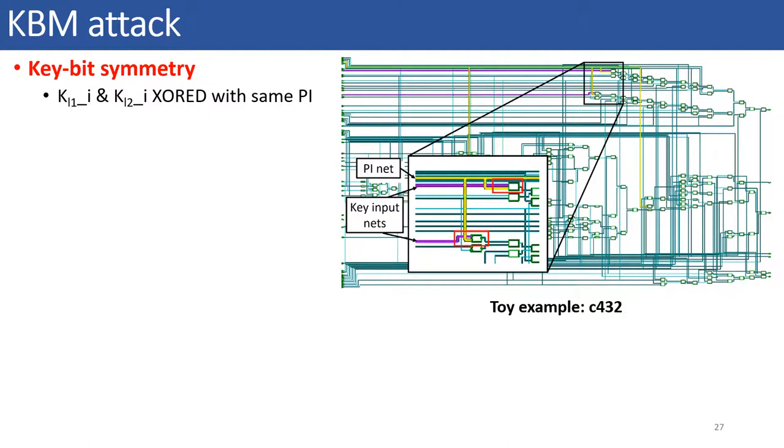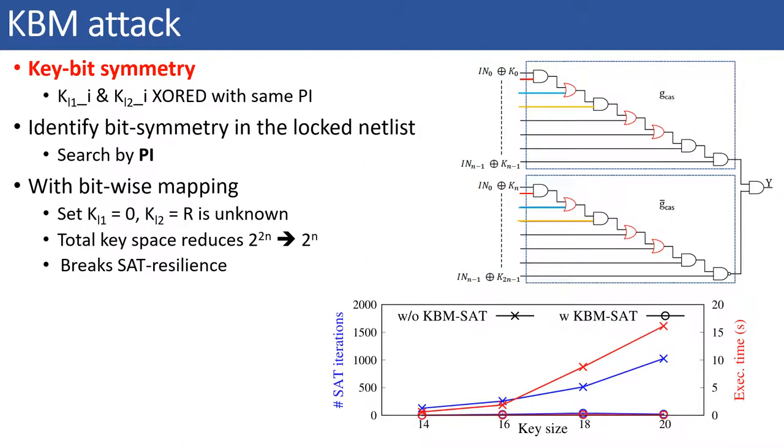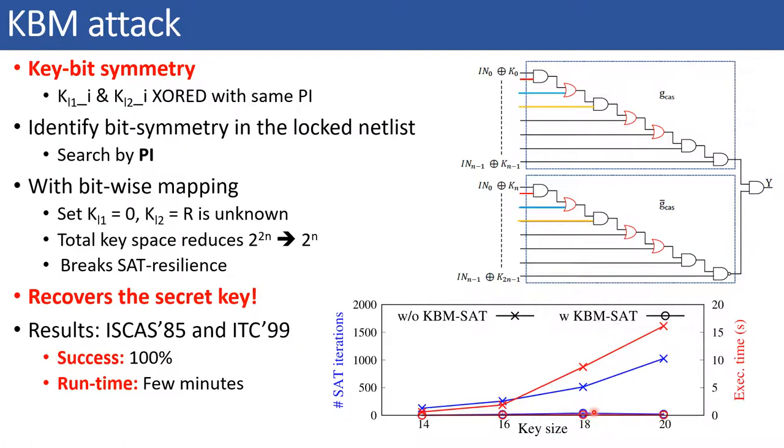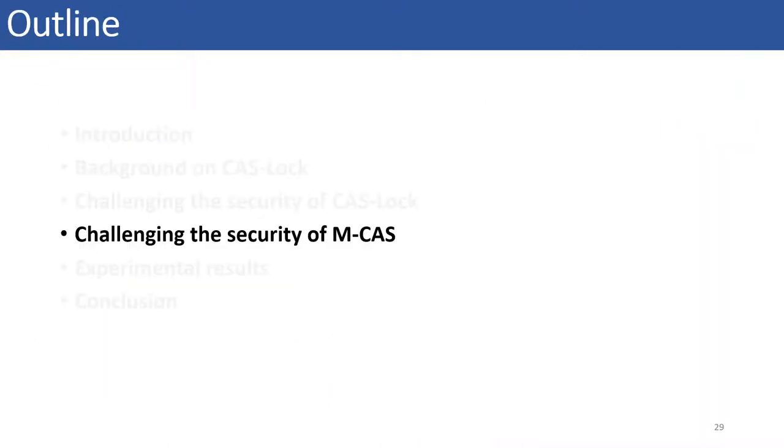Here is an example showing how the key bit mappings are identified from an actual schematic. After identifying the bitwise mapping between the two keys, setting one part to some random value leads to the retrieval of the second part of the key using the SAT attack. Now, setting one part of the key reduces the key search space from 2 to the power 2N to 2 to the power N thereby aiding the SAT attack. We can see here that without a proposed KBM SAT attack, the number of SAT iterations exponentially increase with the key size. However, with the KBM SAT attack, the number of iterations have reduced to linear complexity. Thus, we have successfully recovered the secret key unlocking the lock design in few minutes as compared to years.